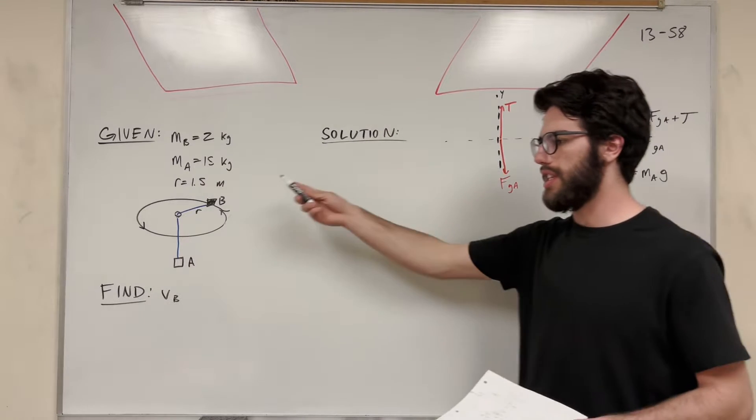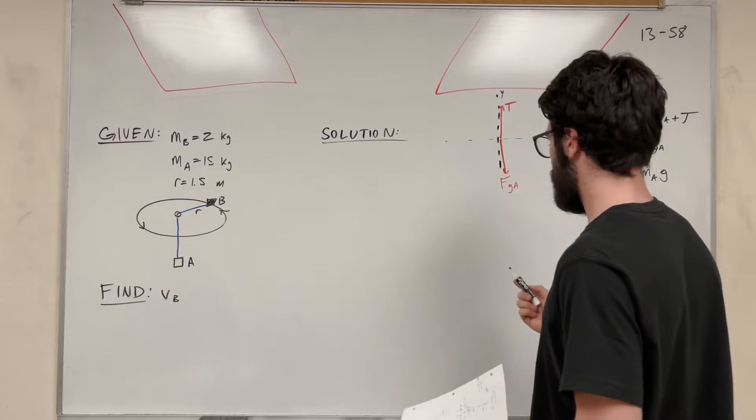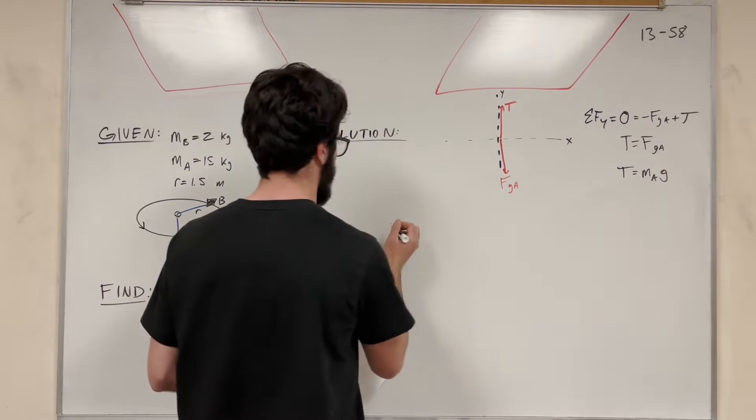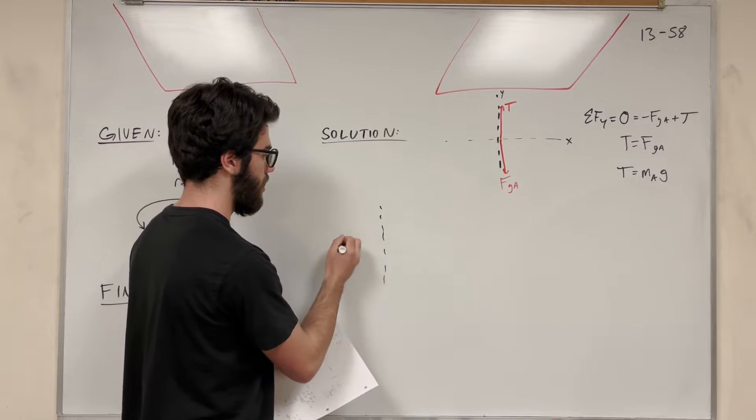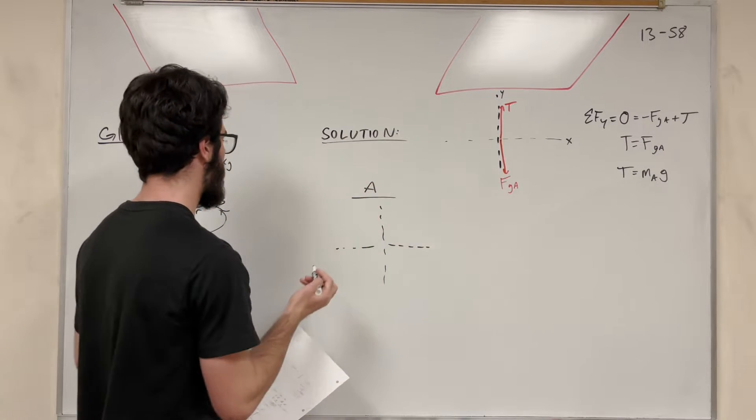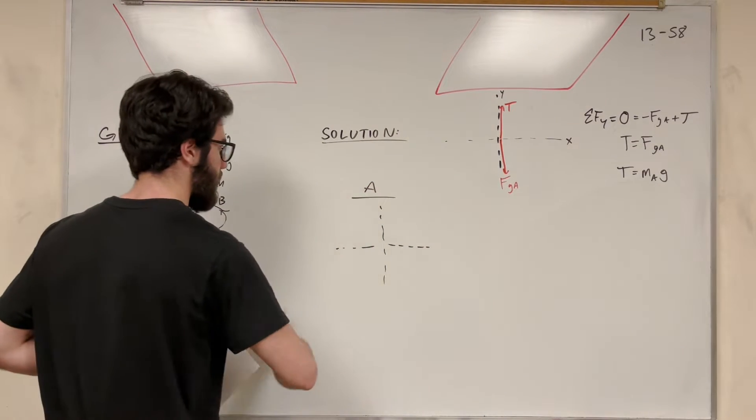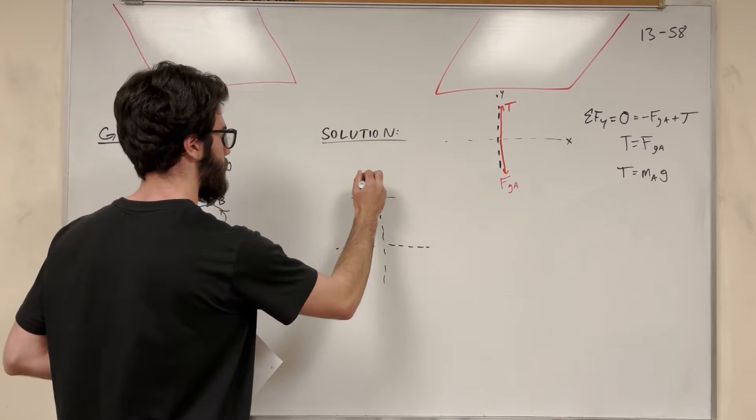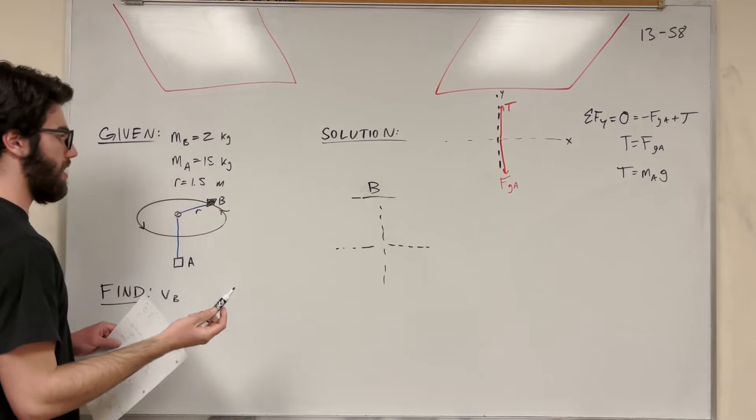Okay, so we have this, but we need to find velocity of B. How are we going to do that? Well, let's start another force body diagram. Let me go over here, and this time it's for block B.